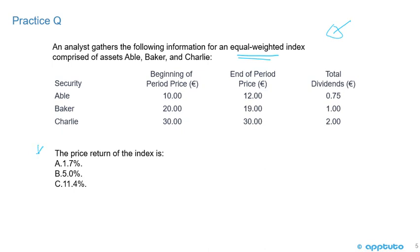Again, it's asking for the price return. They give us beginning period price, ending period price, and total dividends. Asset A: beginning price 10 euros, ending price 12 euros, total dividends 0.75. Asset B: beginning price 20 euros, ending price 19 euros, total dividends 1 euro. Asset C: beginning price 30 euros, ending price 30 euros, total dividends 2 euros. Is the price return A, 1.7%; B, 5%; or C, 11.4%?